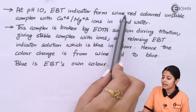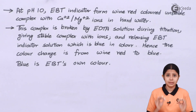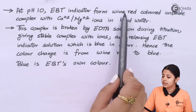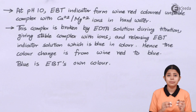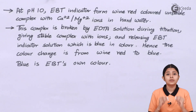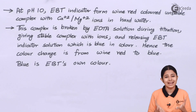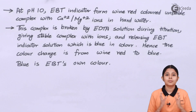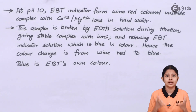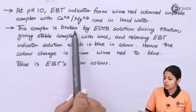At pH 10, the EBT indicator forms a wine red colored unstable complex with Ca2+ and Mg2+ ions in hard water. If EBT is put in pure water it has nothing to react with, but in hard water it instantly reacts with Ca2+ and Mg2+ ions and turns wine red. In this way, we can find out whether water is hard or soft using the EDTA method.